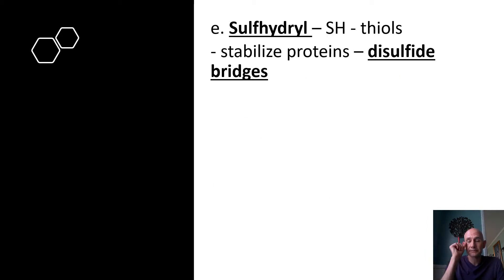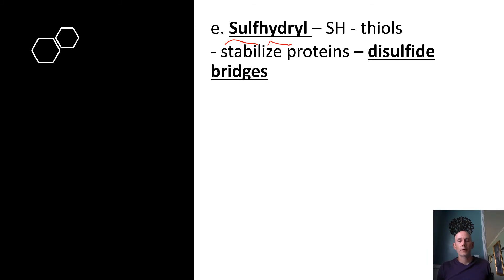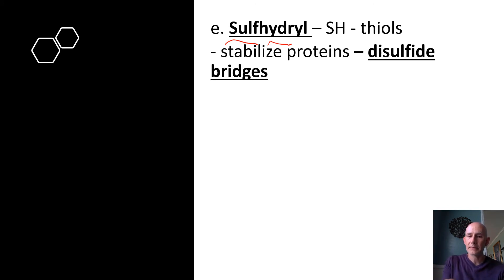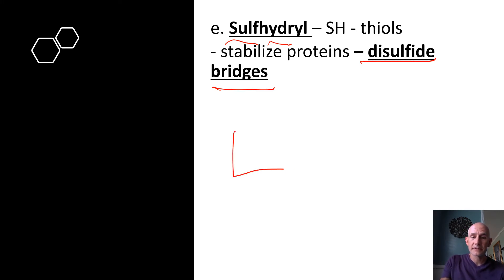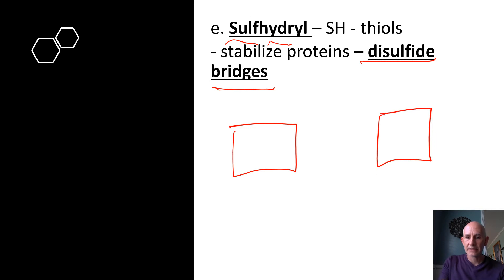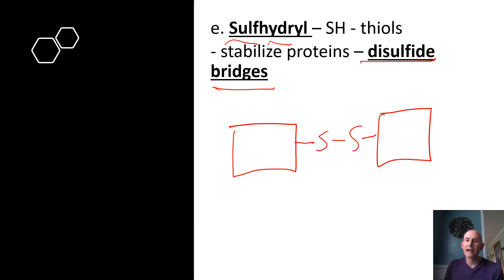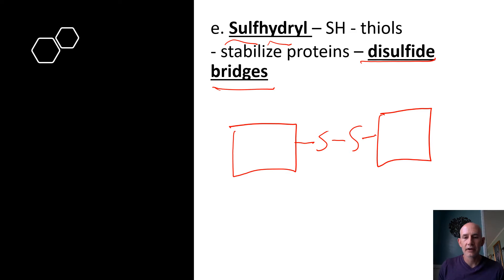Sulfhydryl groups — sulfur plus hydrogen — are important in proteins, as they are part of amino acids. If you've got two sulfhydryl groups, they may bond together, forming what is known as a disulfide bridge. If this is one amino acid and this is another, the sulfur atoms bind together — that's a disulfide bridge. If you have curly hair, it's because you have lots of disulfide bridges in the keratin that makes up your hair.